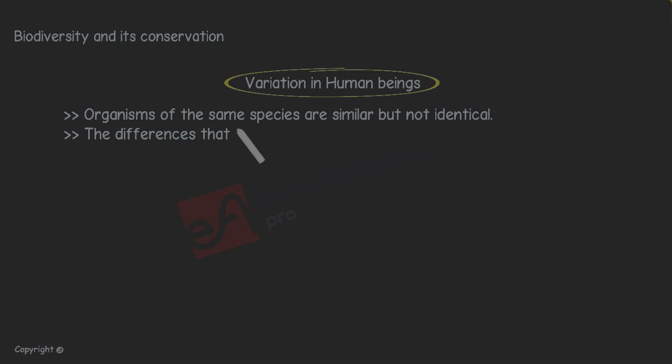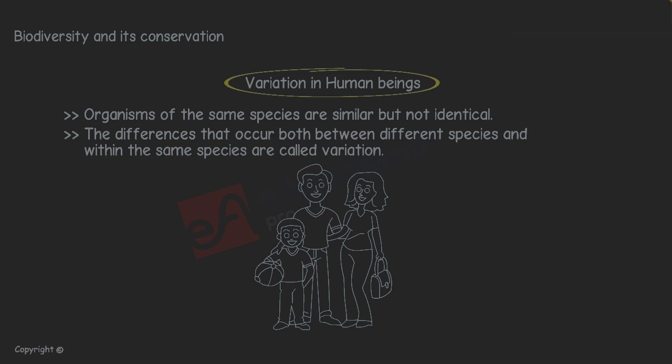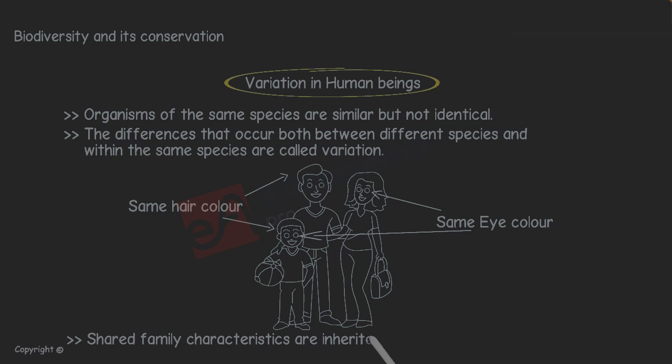The differences that occur both between different species and within the same species are called variation. The members of this family tree are related and so they share certain similar characteristics such as hair color and eye color. Shared family characteristics are inherited from parents.